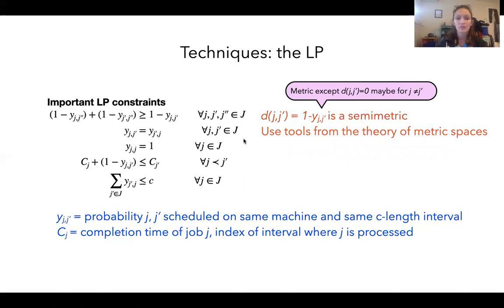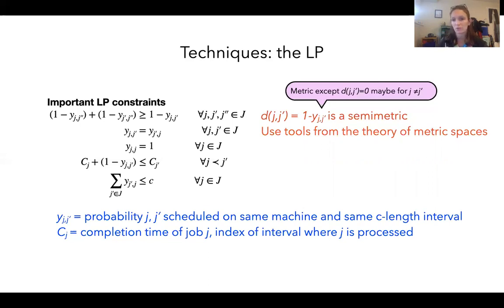These three constraints together allow us to form a distance function D equal to one minus Y. This distance is a semi-metric — think of it as a metric for all intents and purposes, with the exception that the distance between two jobs might be zero even if j and j prime are not the same. So now we have a semi-metric on the set of jobs, and we can use tools from the theory of metric spaces.